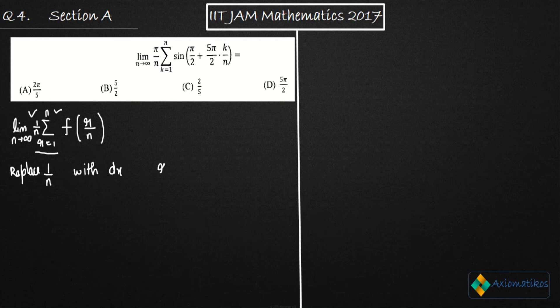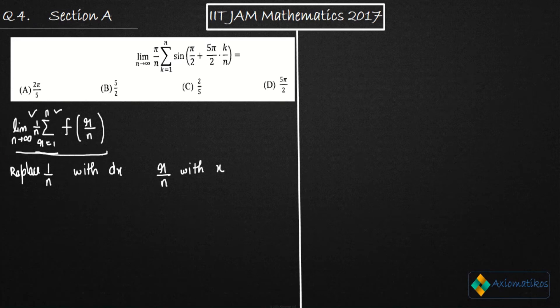And R over N with X. So this whole limit will convert to integral. So what is that integral? Integral will be F of X dx, 0 to 1.